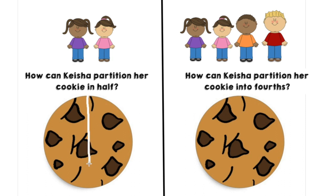I have to take my time to try to make it as even as possible. So now the cookie is split into two equal pieces. Keisha would have one out of the two pieces, and her friend would have one out of the two pieces. So each of them would receive half of the cookie.